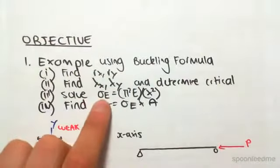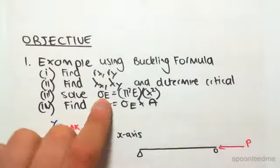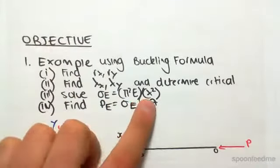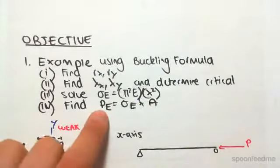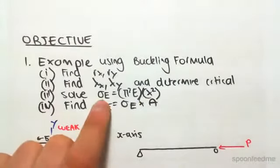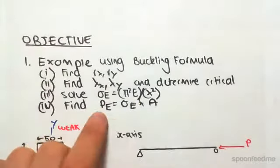We're then going to solve this formula to find the buckling stress, pi squared e on lambda squared, and then we're going to find the force, which is just going to be that stress times the area of the section to find the stress which causes the first mode of buckling.